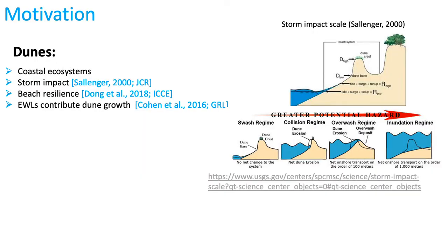Foredunes provide habitat and natural protection in coastal areas. Dune formation and development are controlled by aeolian, marine, and ecological processes. The dune height is a key parameter for determining storm impact on barrier islands and for calculating the coastal resilience index. The Sallenger storm scale predicts dune erosion when water levels exceed the dune toe. However, a previous study conducted on a mesotidal beach suggested that extreme water levels can contribute to dune growth.